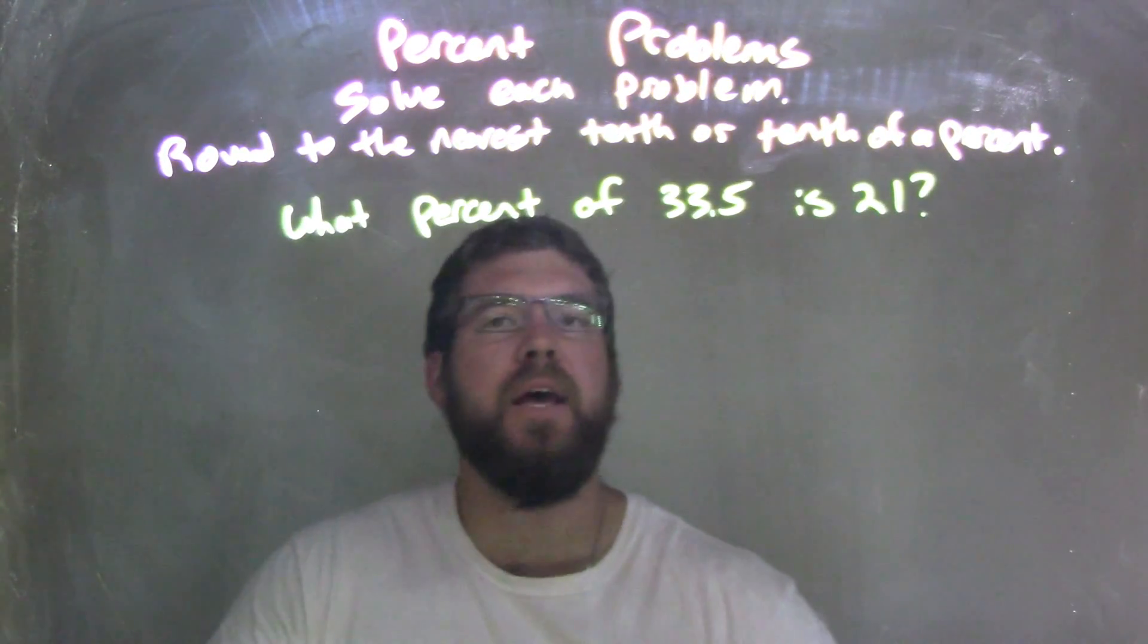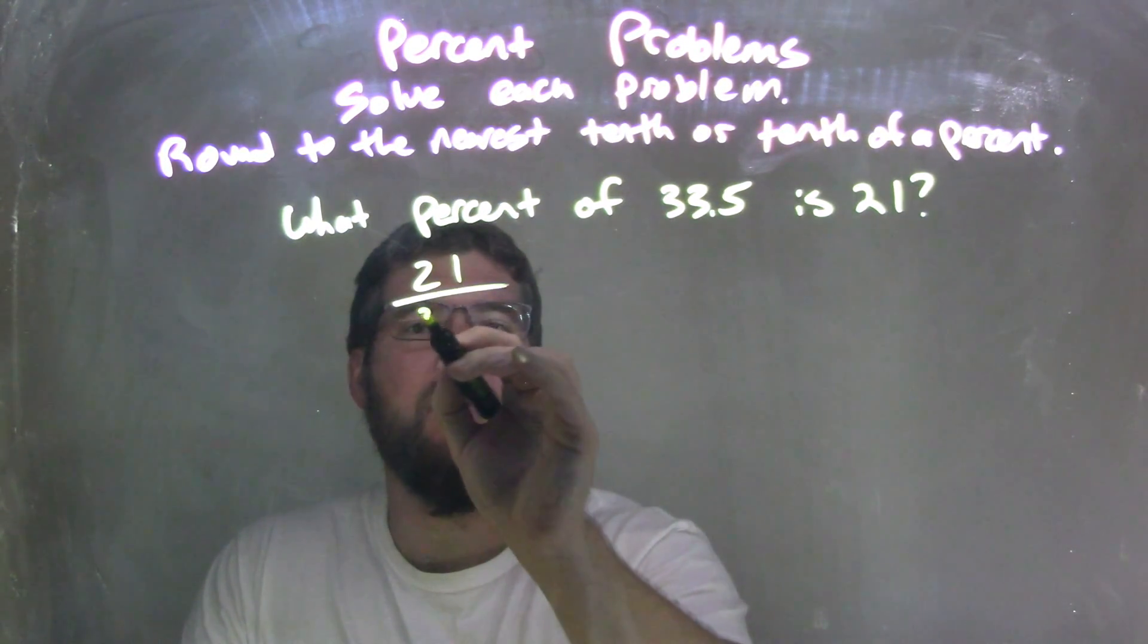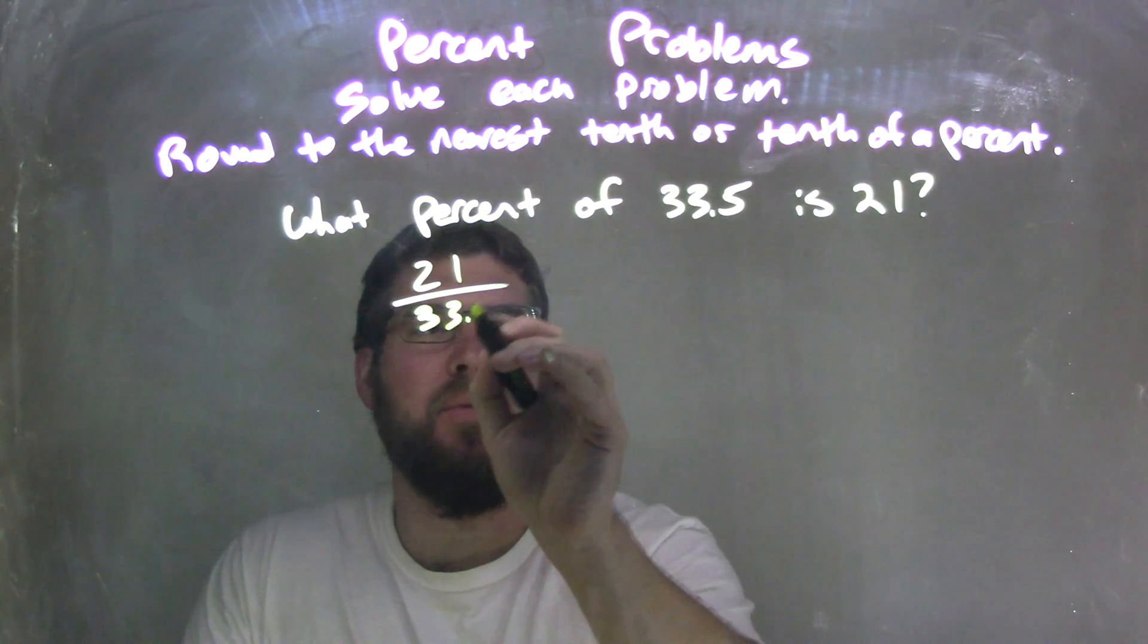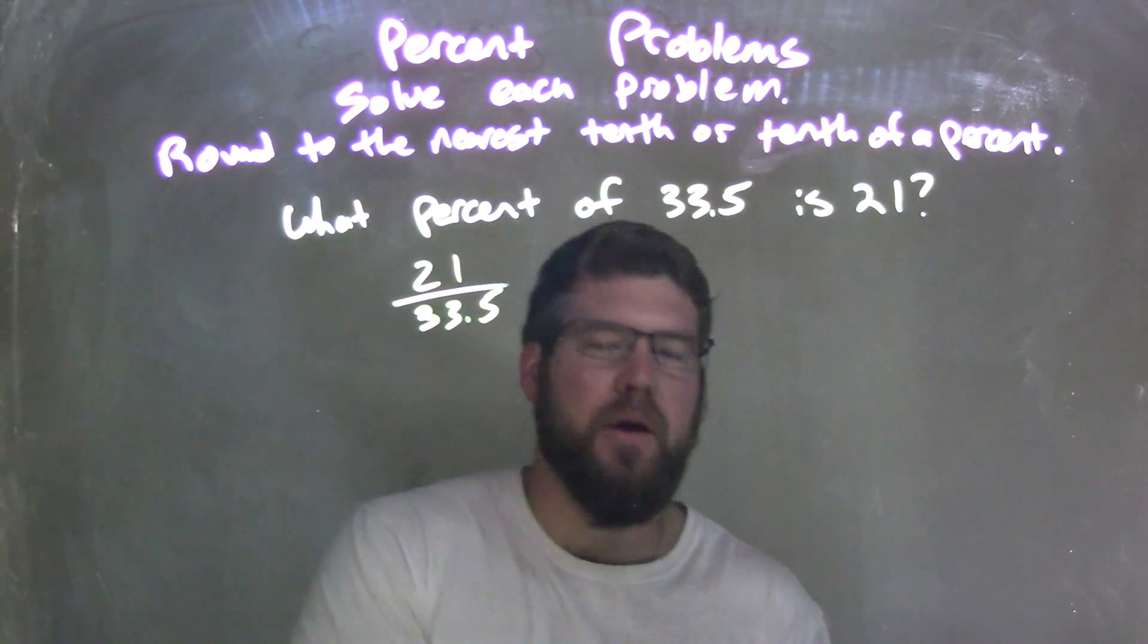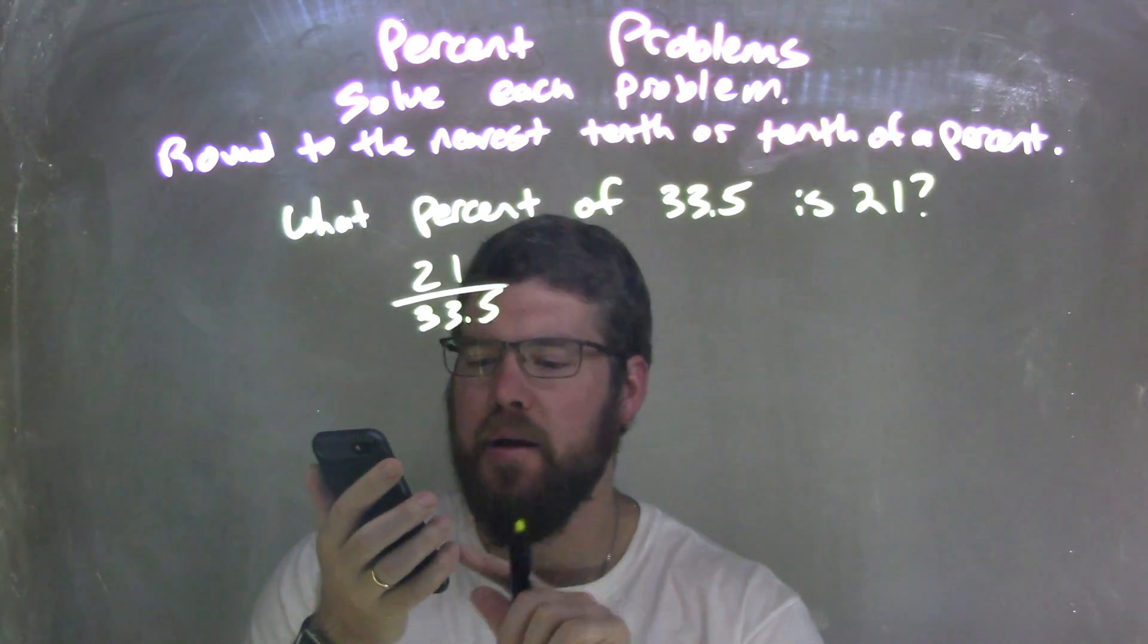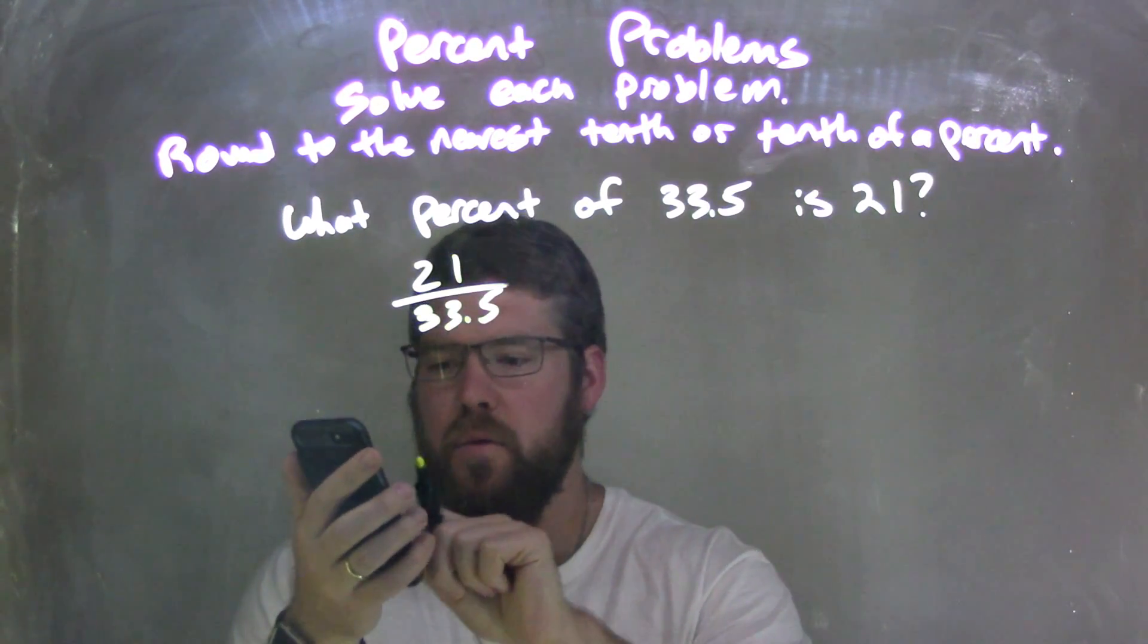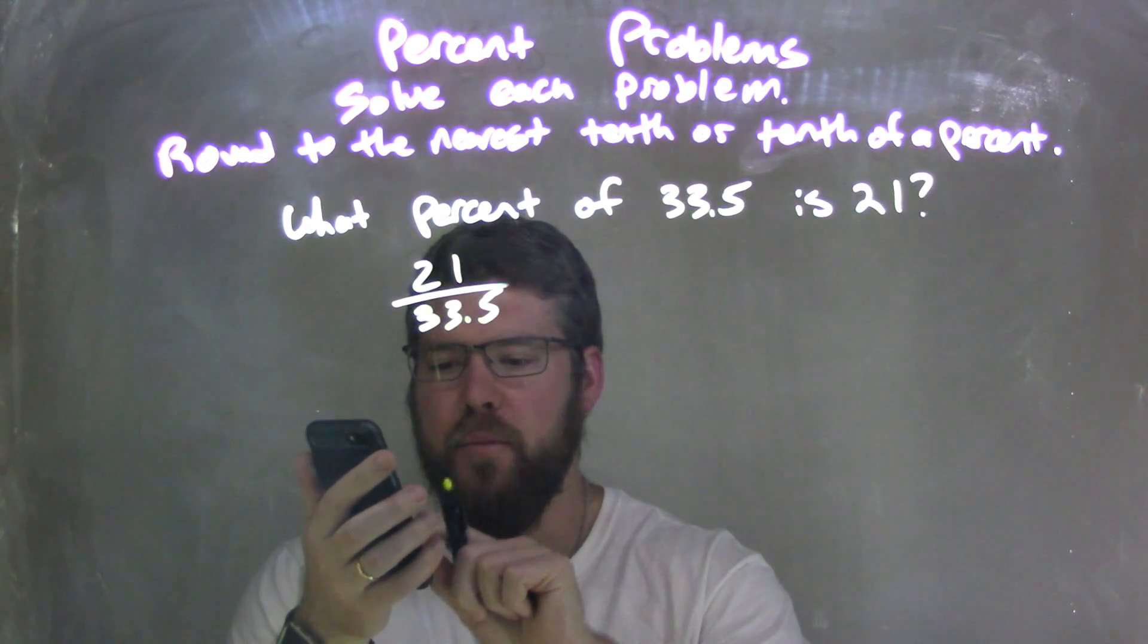Well, I would take that 21 and divide it by the 33.5. Well, I'll use my calculator here. 21 divided by 33.5.